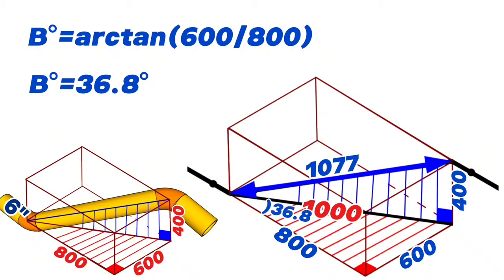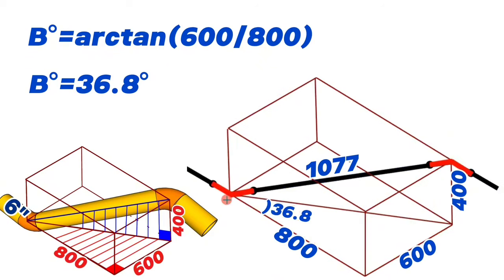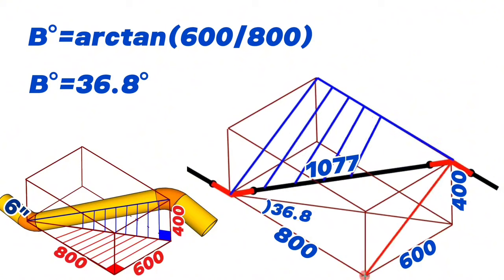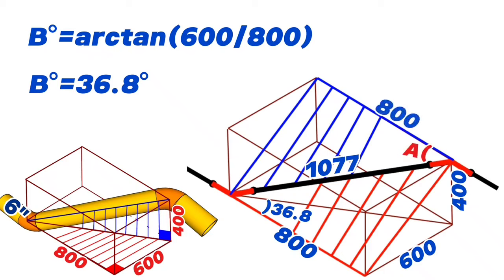Now let's calculate the cut elbow angles. We complete each elbow back to a right-angle triangle on the same plane, painting one blue and one red. These right triangles are equal to each other, so the intersection angle of the elbows will be the same — marked as angle a. One perpendicular side is 800 millimeters and the hypotenuse is 1,077 millimeters.